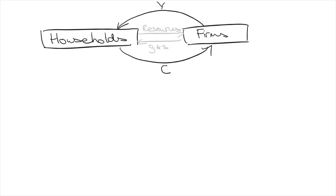The more flow between firms and households, the more economic activity to satisfy wants and needs. But the reality is, households don't just spend every dollar they earn — they save part of it. This takes income out of the circular flow, so we call this a leakage.